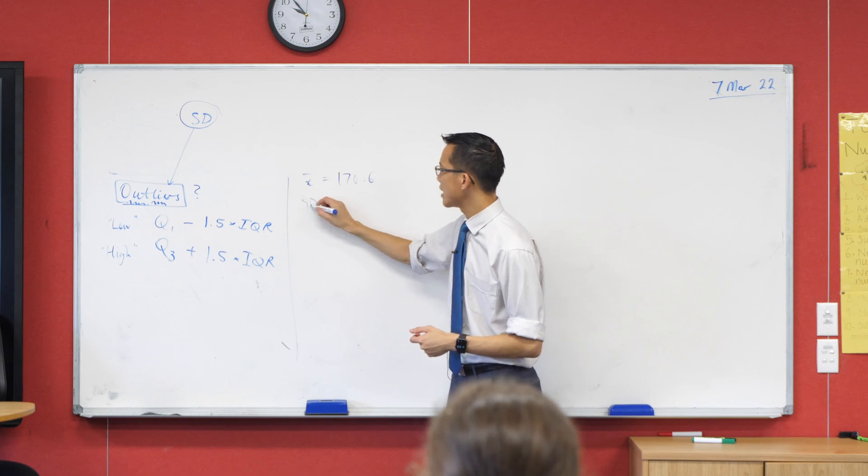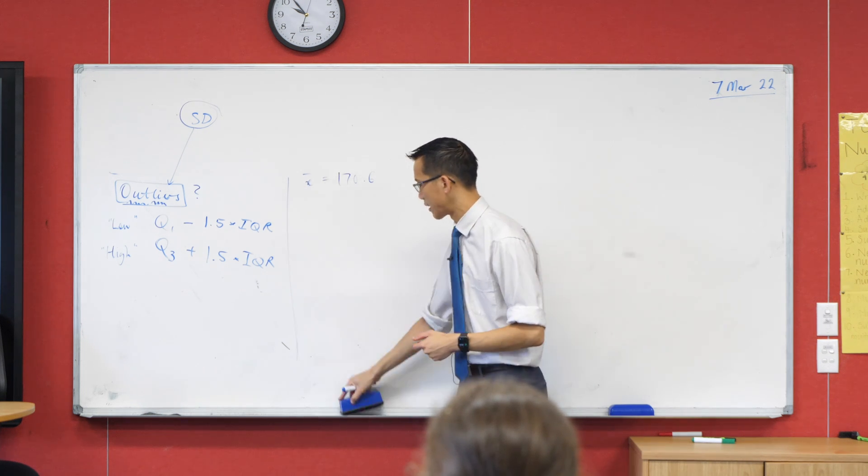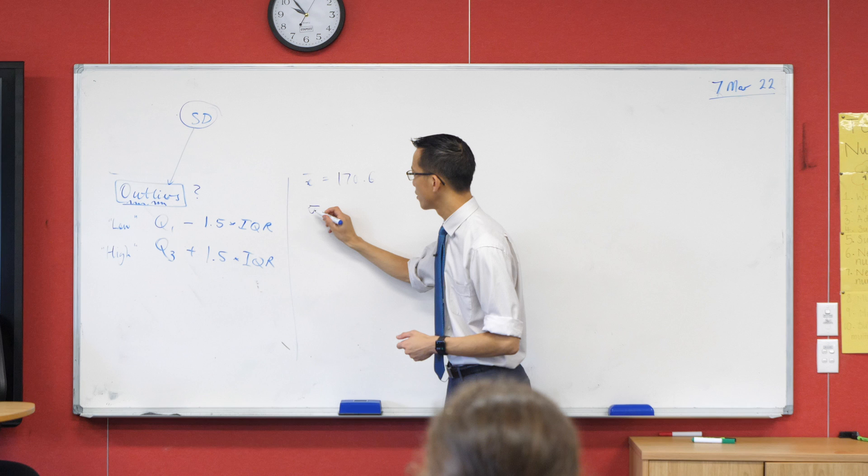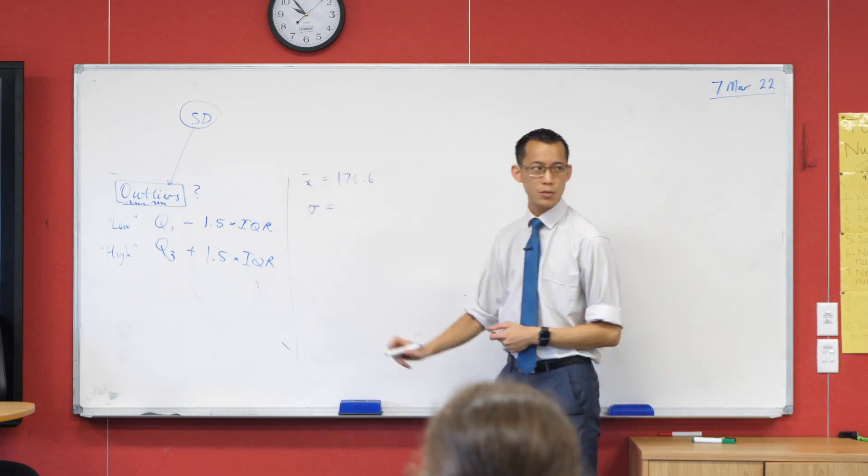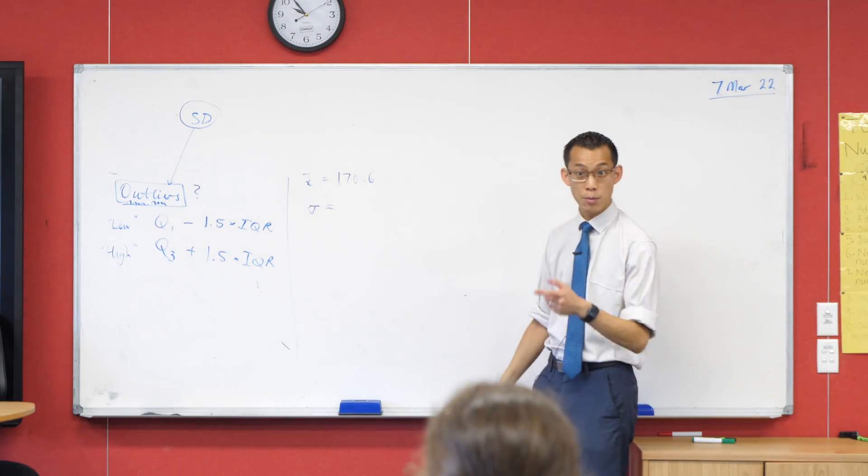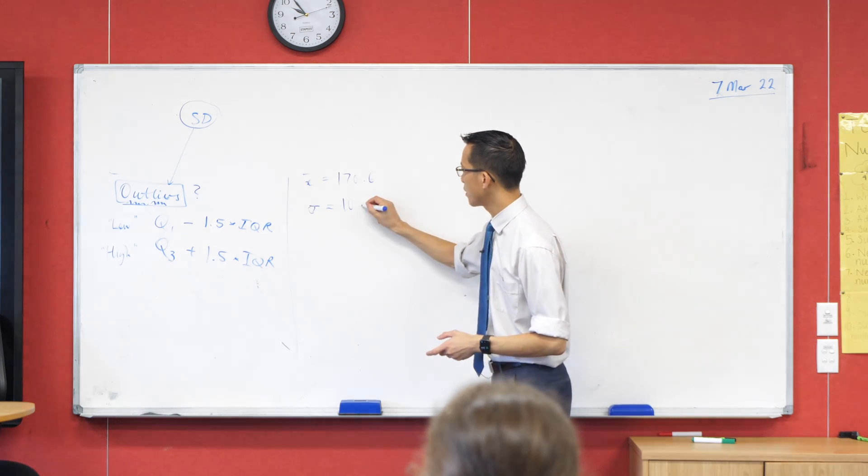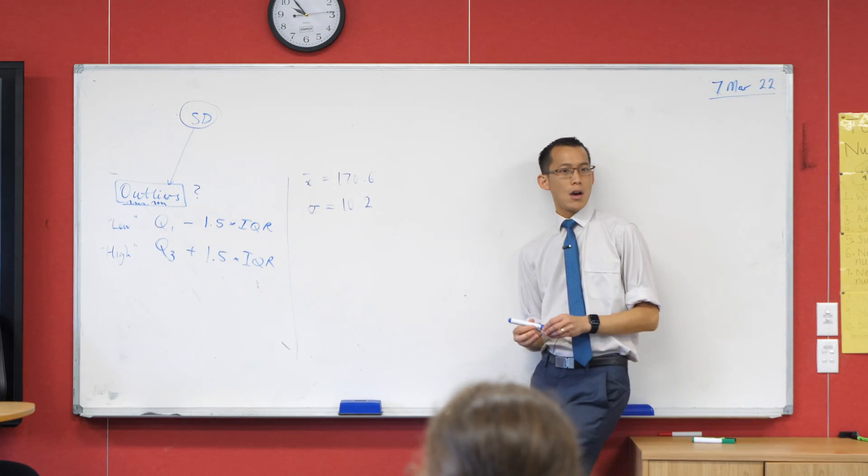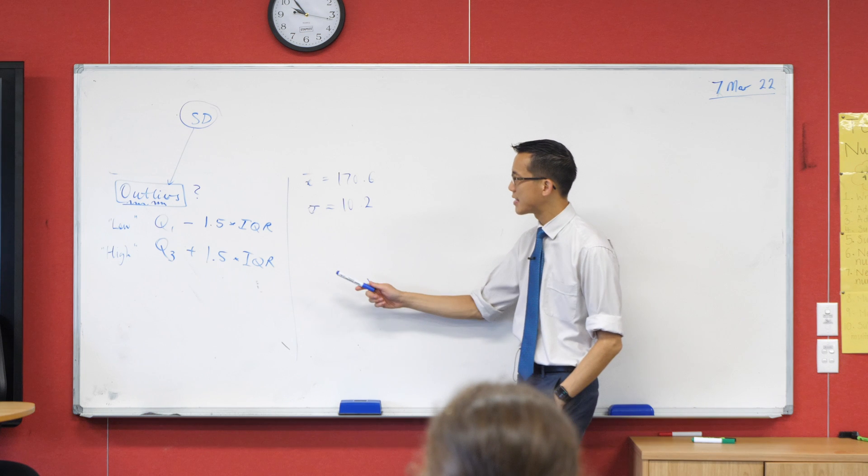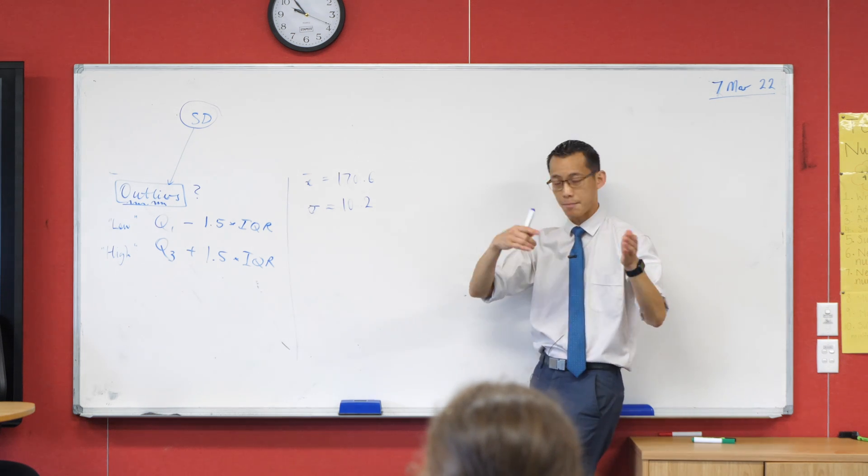And then we've got a standard deviation or you can actually use a sigma, that's a Greek letter, like so, except my wiper mark is not doing great. And I think from memory you said it was 10 point something, right? 10.2? Thank you very much. Okay, now what we can do is use this same idea here and say, well, let's just go like up and down.